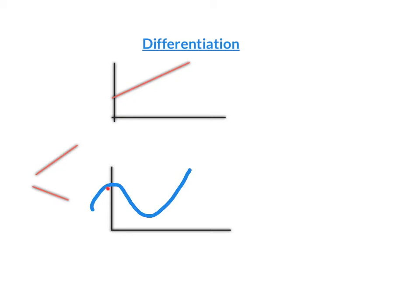When we have a function that's not linear, it's slightly more difficult to describe the gradient. And that's because the gradient varies throughout the function.